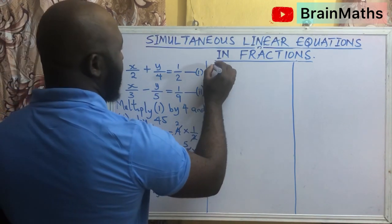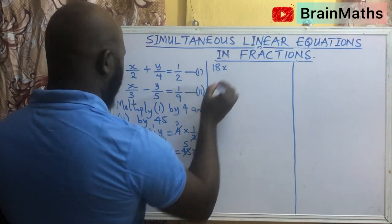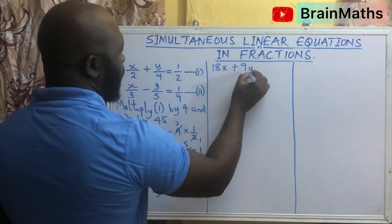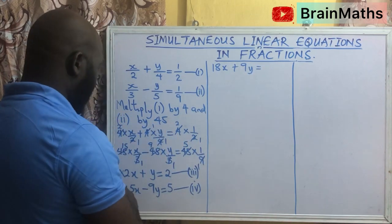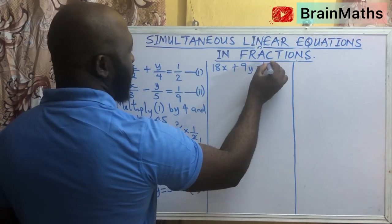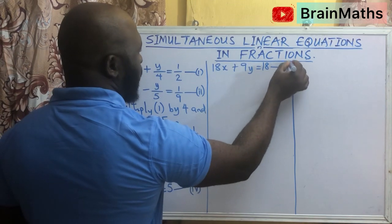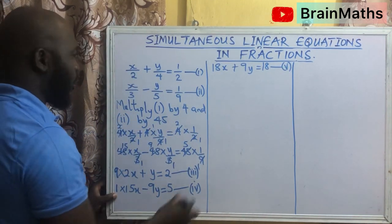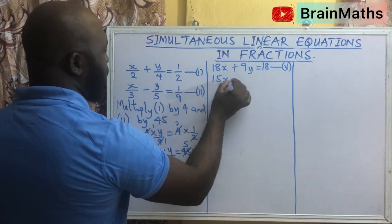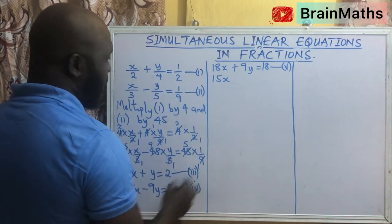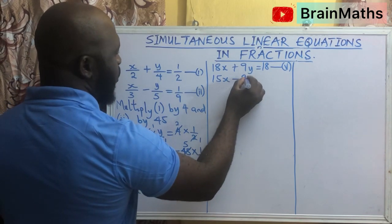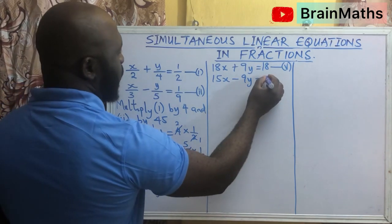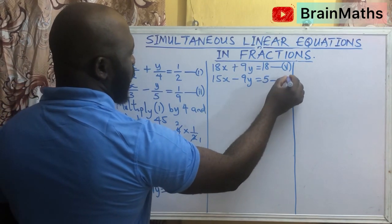So multiplying out: 9 times 2x gives us 18x, and 9 times y gives plus 9y, equals 9 times 2 which is 18. So this is our new equation 5. Also, multiplying equation 4: 1 times 15x remains 15x, 1 times 9y gives minus 9y, equals 1 times 5, that is 5, which is equation 6.